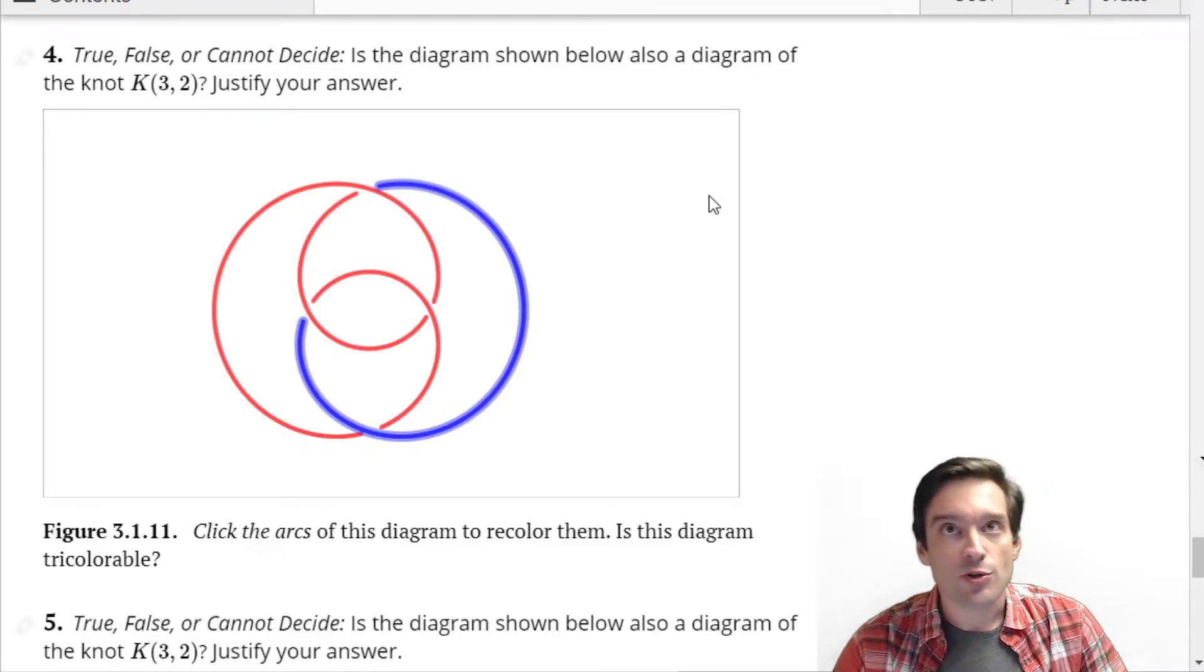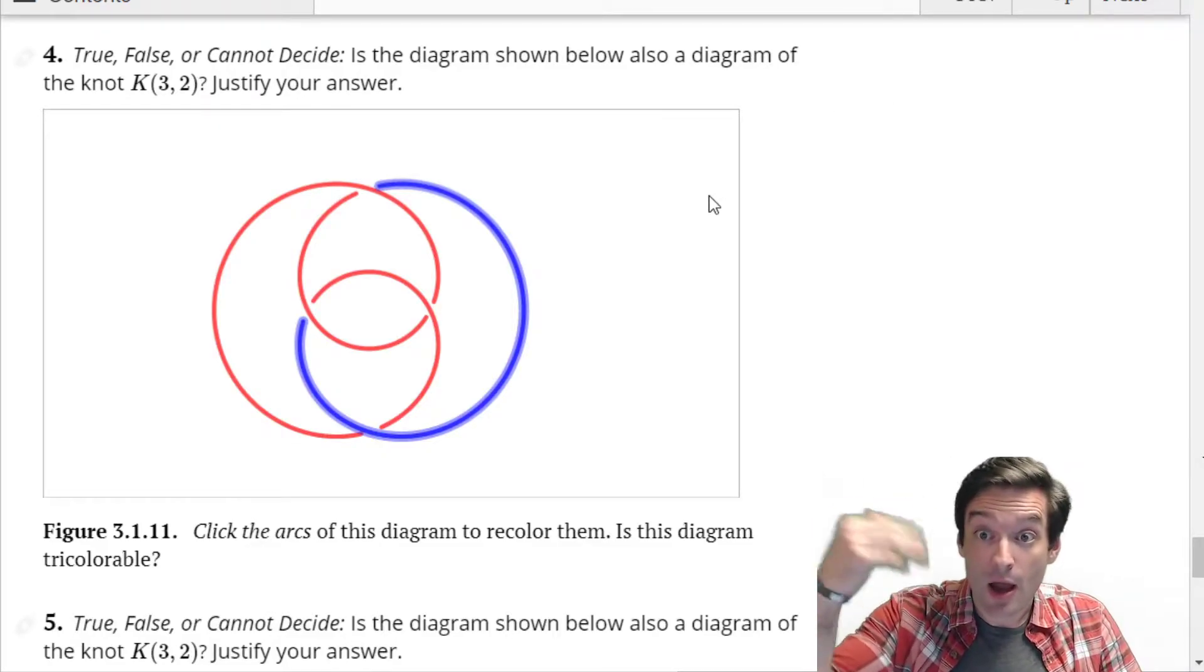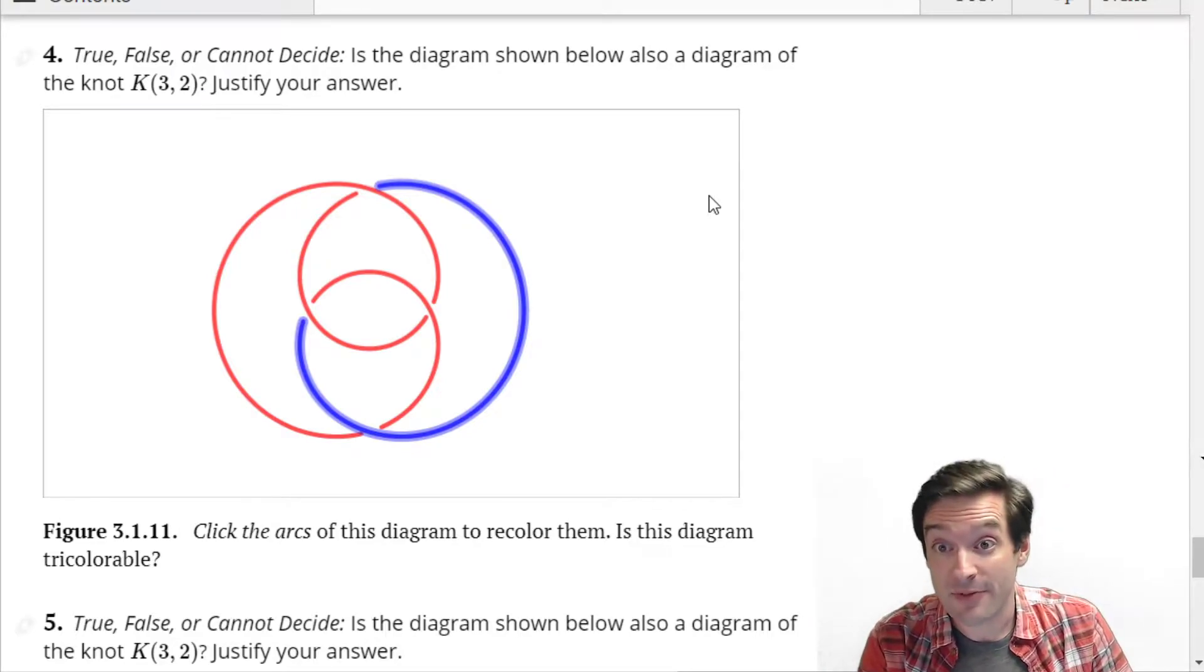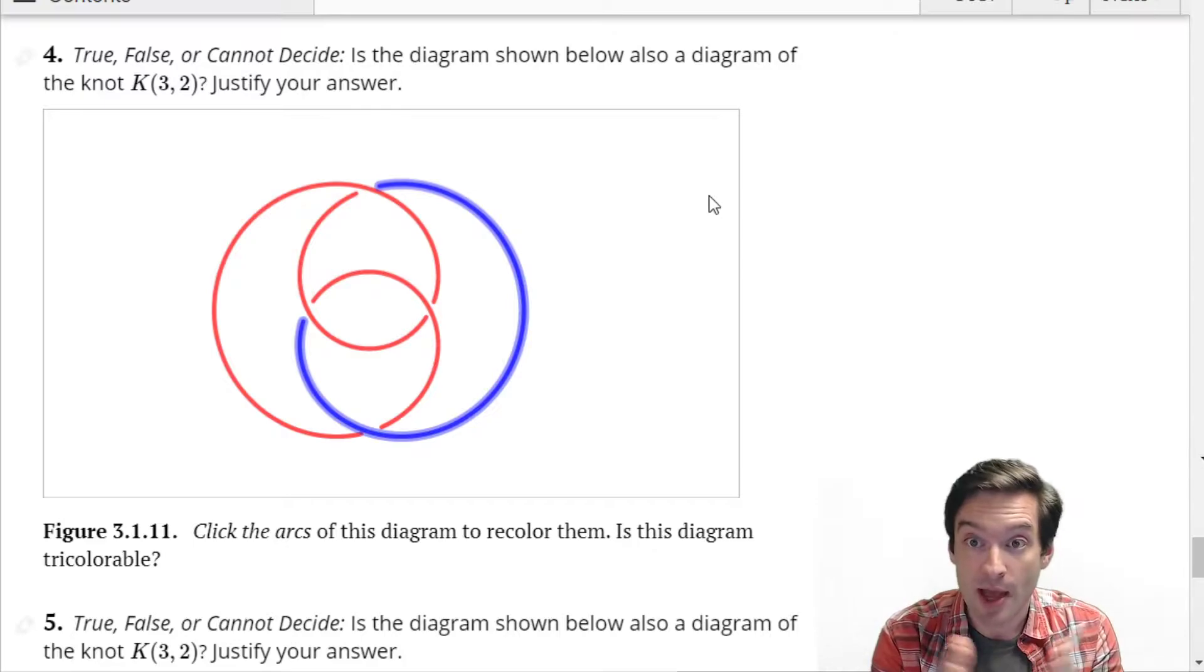So in this activity, we're trying to use the idea of tricolorability to distinguish between diagrams and figure out whether it's conceivable that two diagrams could represent the same knot or whether it's for sure that two diagrams represent different knots.